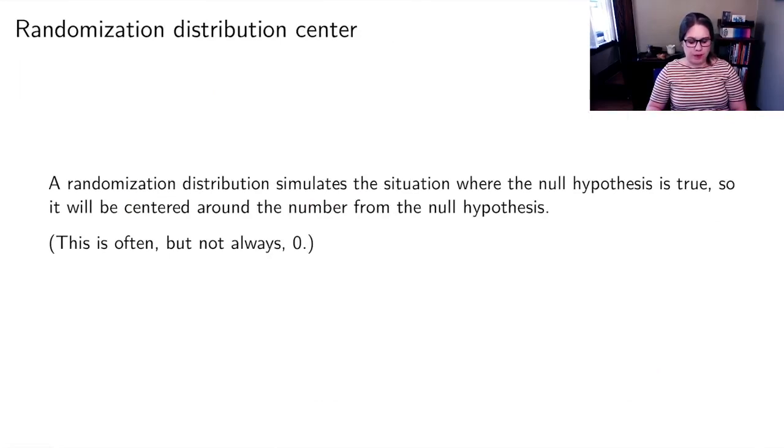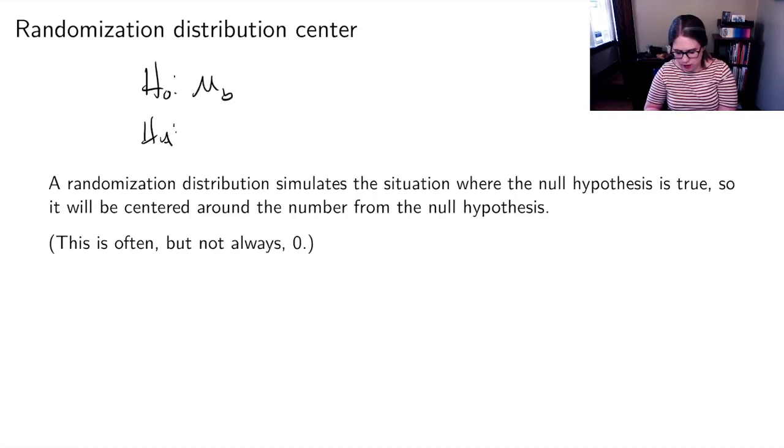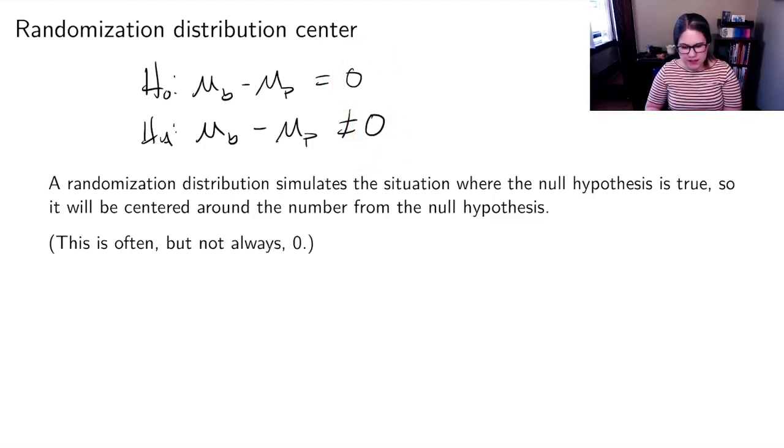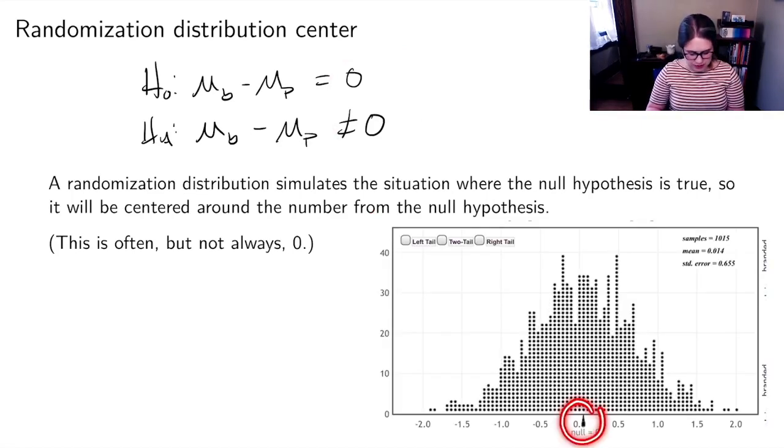One thing that's good to know about a randomization distribution is because it's simulating the situation where the null is true, it's going to be centered around the number from the null hypothesis. In this case, we had our null was mu branded minus mu plane equal to zero, or mu branded minus mu plane not equal to zero. So that number that appeared in the hypothesis was zero. It's often zero, it's not always zero, but that's a really common number to see. This distribution is centered right around zero. That's the most common thing that we get is differences of about zero between the branded and the plane tape.